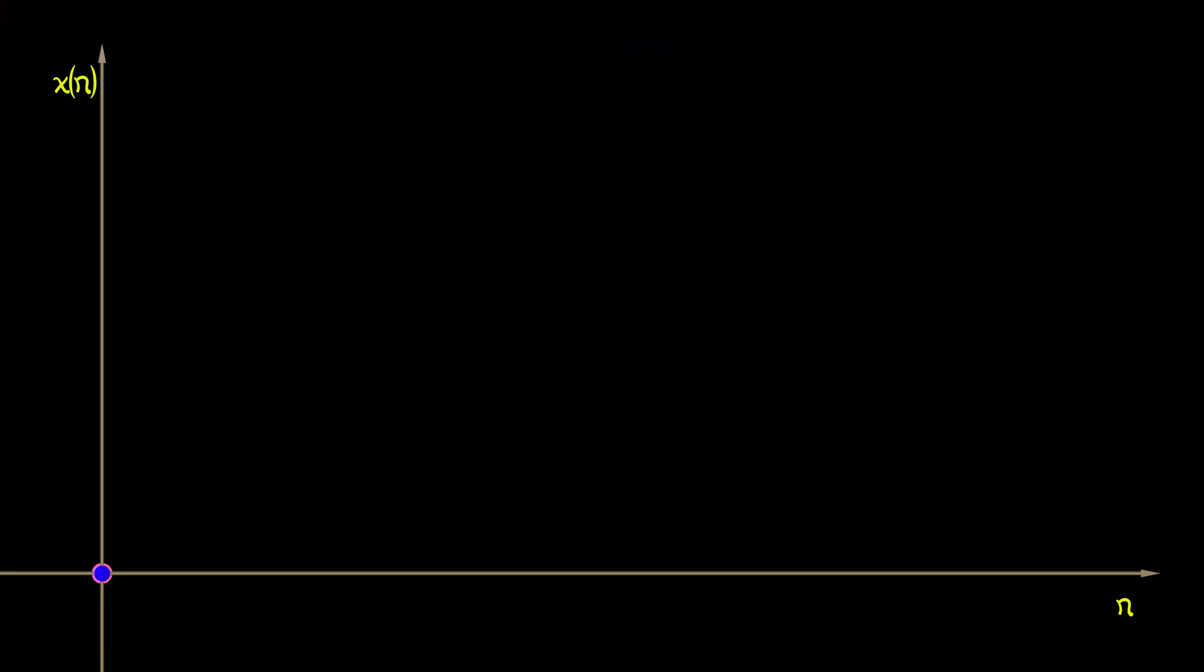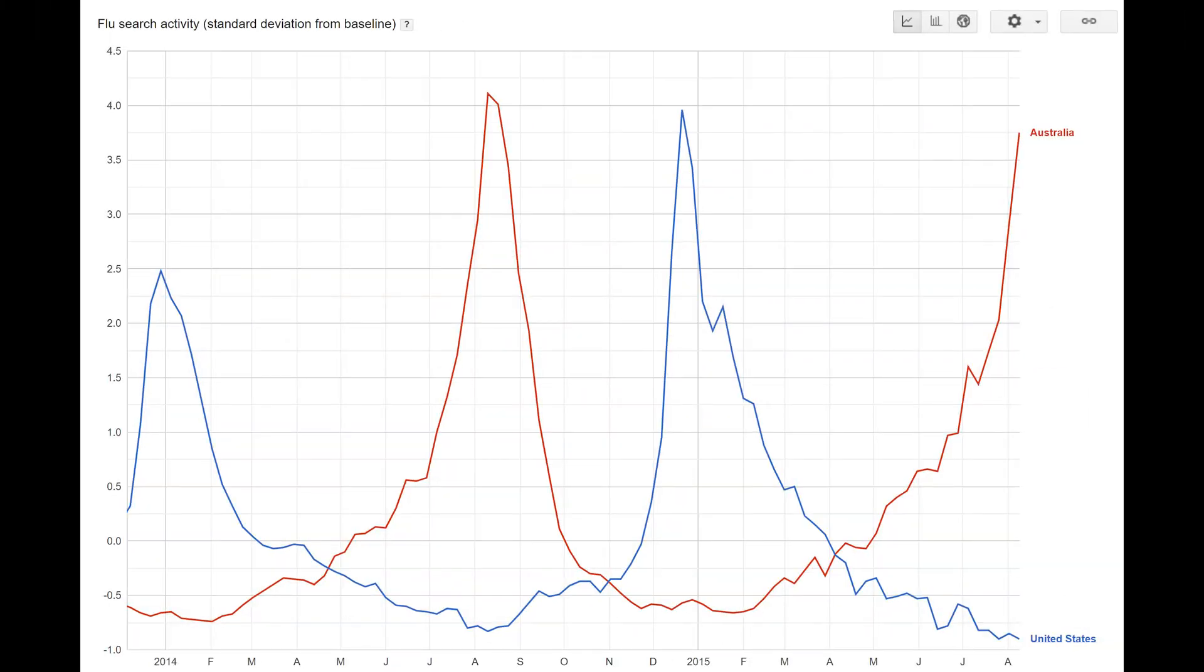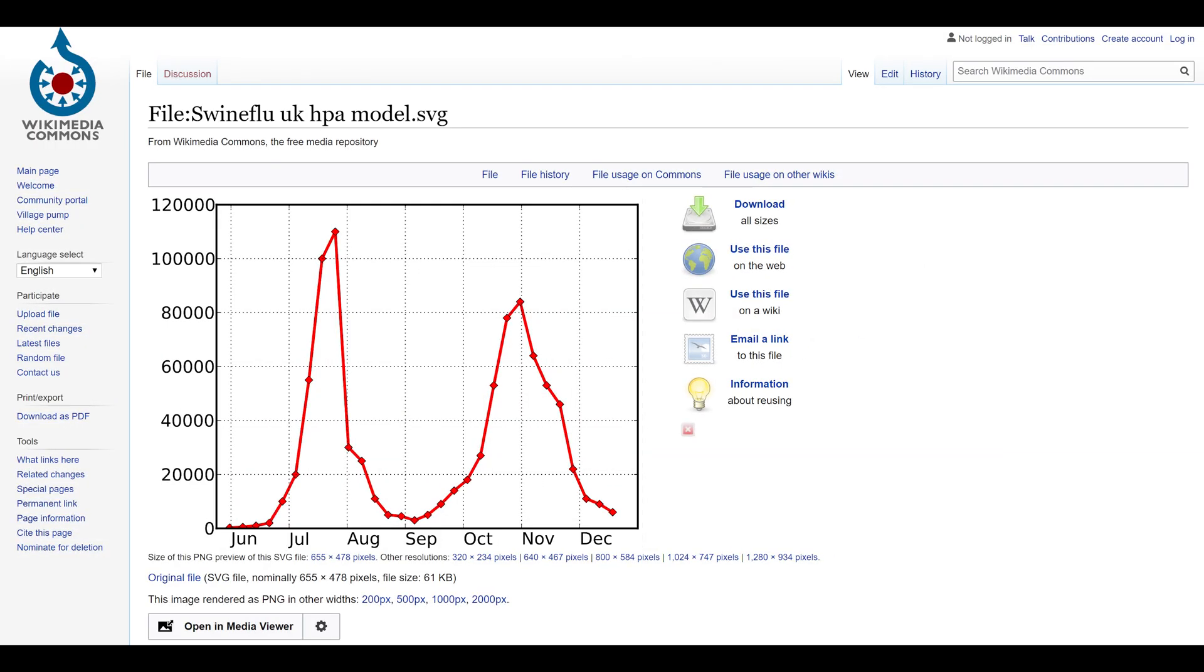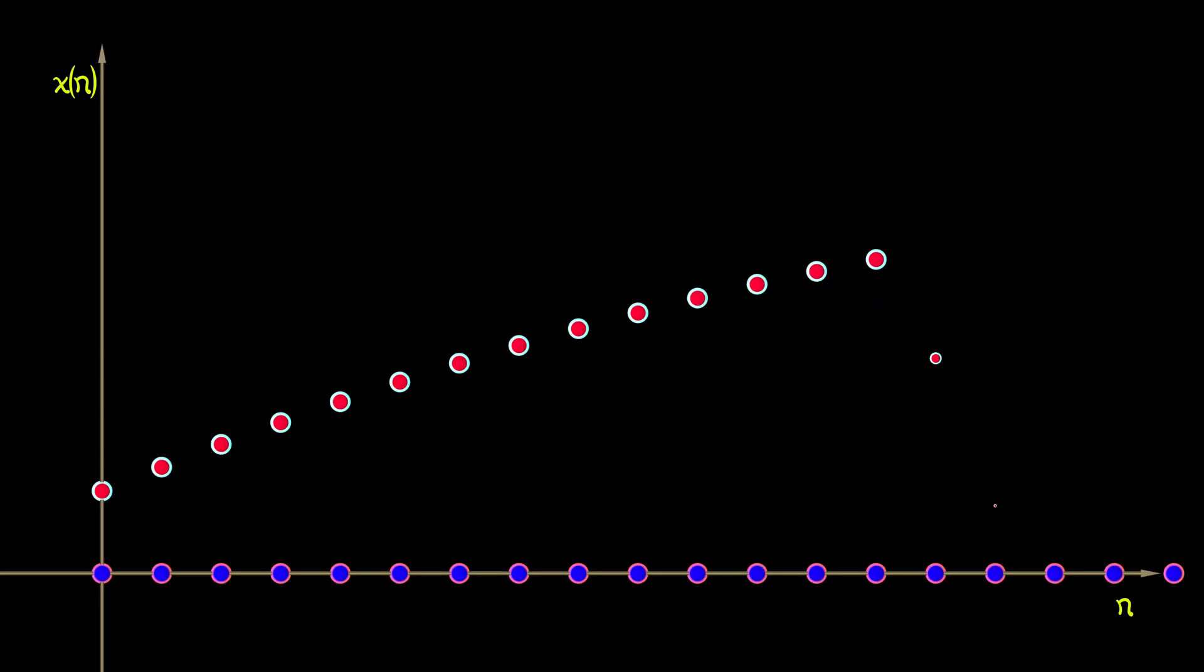On the other hand, discrete time dynamical systems are much better suited to data that comes at regular intervals, like unemployment figures coming out every month or number of patients infected with a virus coming out every day. That type of data leads naturally to discrete time systems.